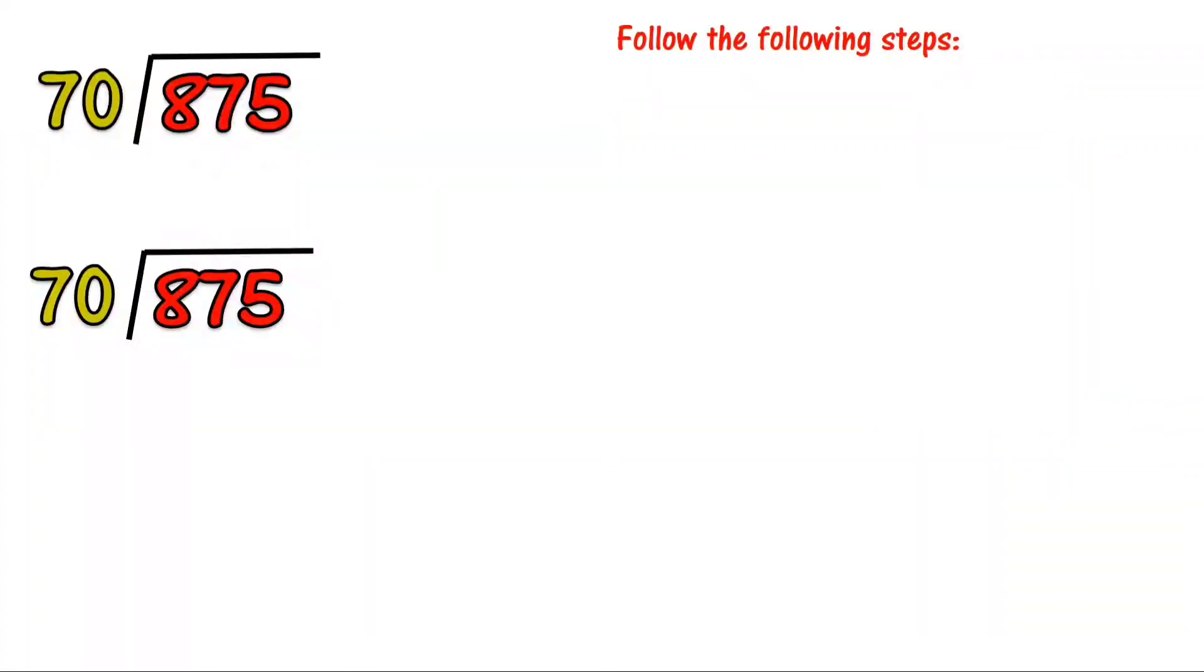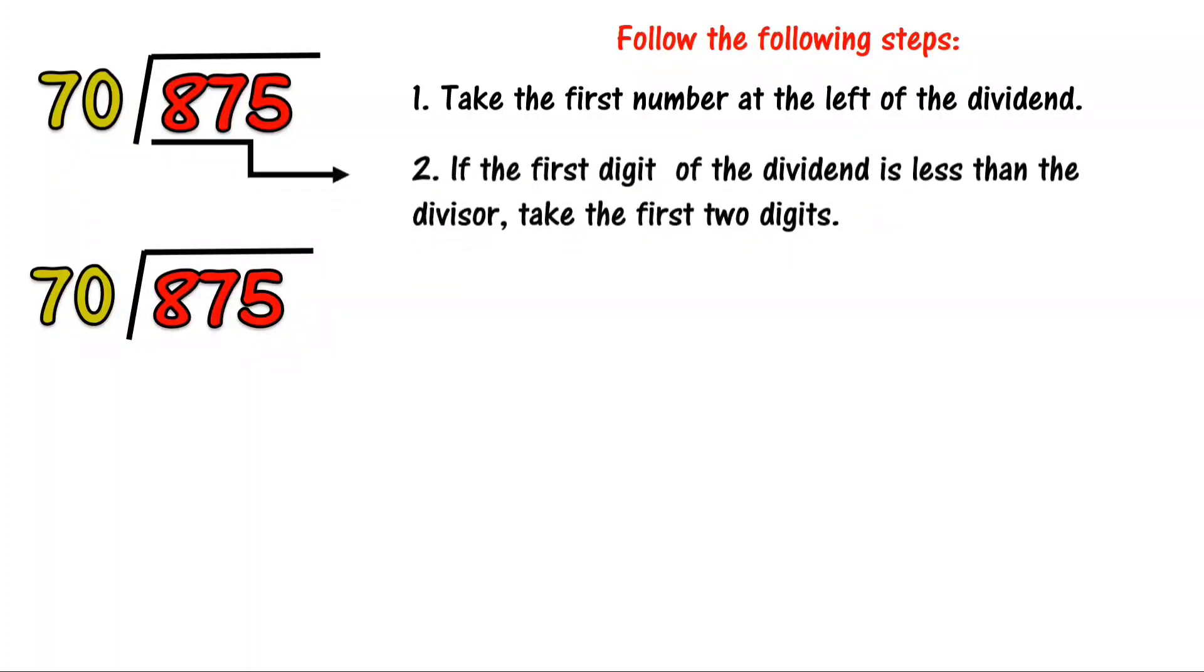Now let us follow the following steps to answer the given equation. First, take the first number at the left of the dividend. In this equation, 875 divided by 70, 8 is the first number at the left of the dividend. 8 divided by 70, but 8 is less than 70.